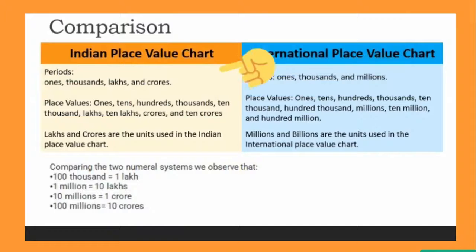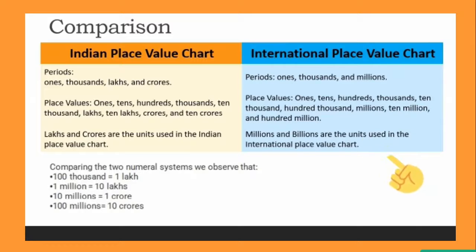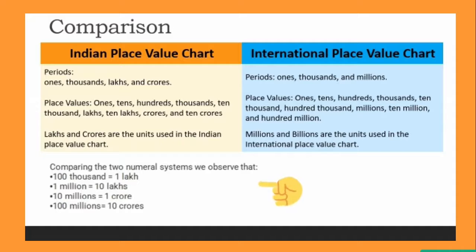As per the Indian numeral system, the first comma is placed after the hundreds place, after which commas are placed after every two digits. As per the international numeral system, the first comma is placed after the hundreds place, after which commas are placed after every three digits. Comparing the two numeral systems: hundred-thousands equals one lakh, one million equals ten lakhs, ten million equals one crore, and hundred million equals ten crores. Bye everyone.